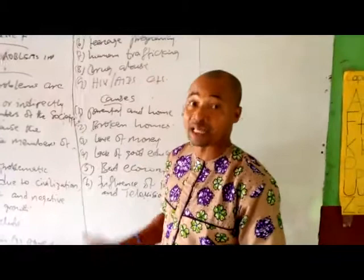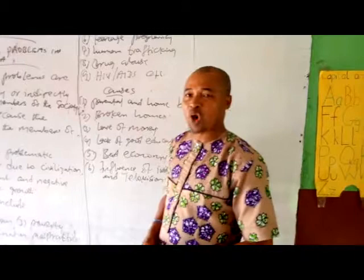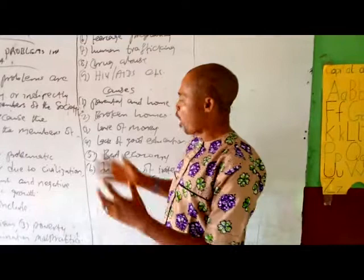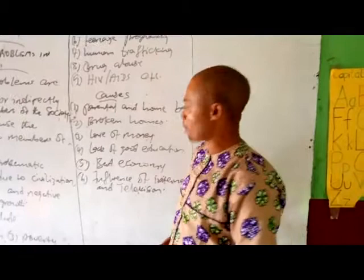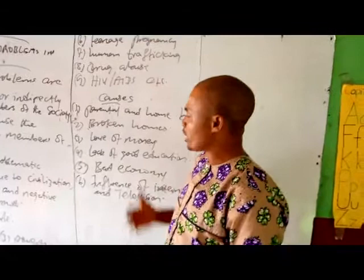Number two: broken homes. Some of these problems, like prostitution — many enter into it because they are from broken homes. The father or the mother might be the only one responsible for the upbringing, and the mother cannot always be there with them all the time. Because the father is not there to provide whatever they need, someone will resolve to satisfy some of the things they need.